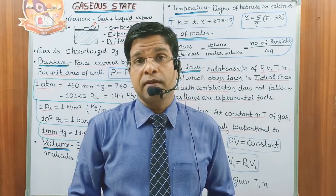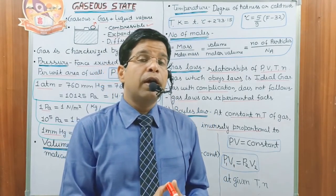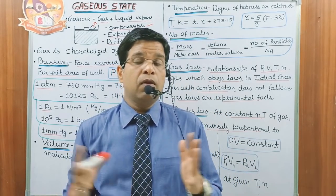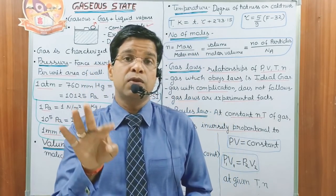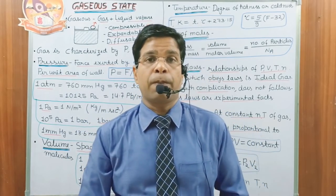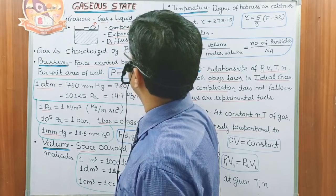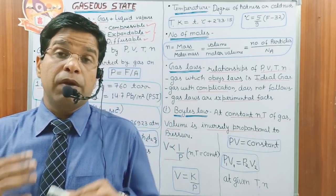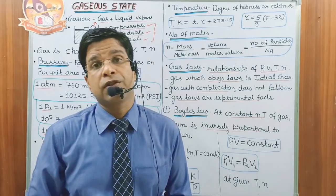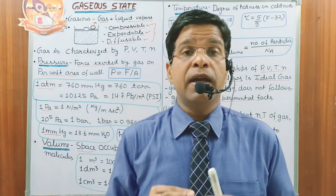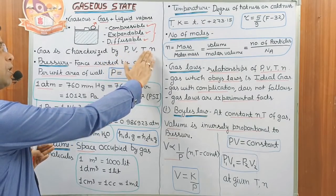These are the general properties of gases — every gas shows these general properties. Whenever we want to characterize a particular gas, we use specific properties: pressure of the gas, volume of the gas, temperature of the gas, and number of moles of the gas. A gas is characterized by P (pressure), V (volume), T (temperature), and N (number of moles).